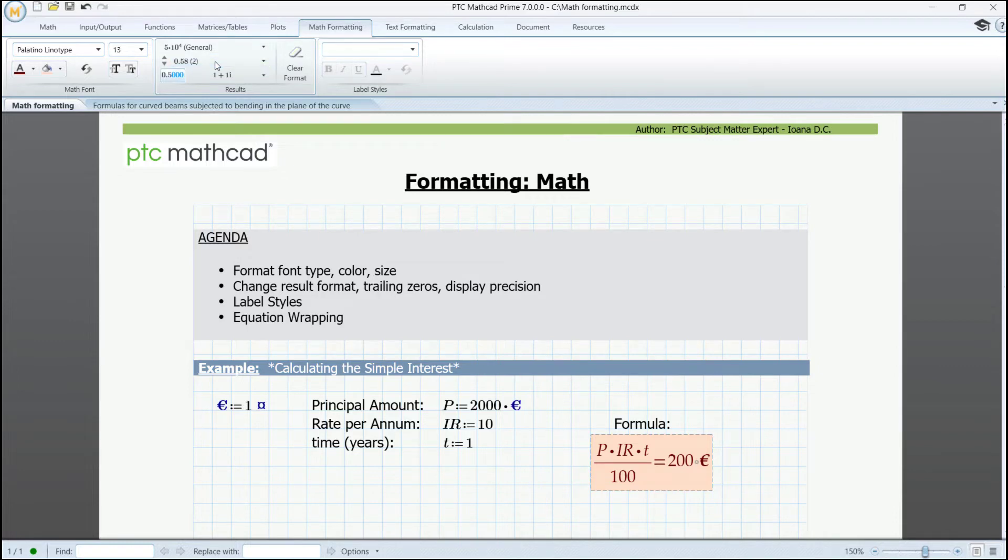If we want, we can set a number of trailing zeros that we want to display, and maybe then change also the display precision.